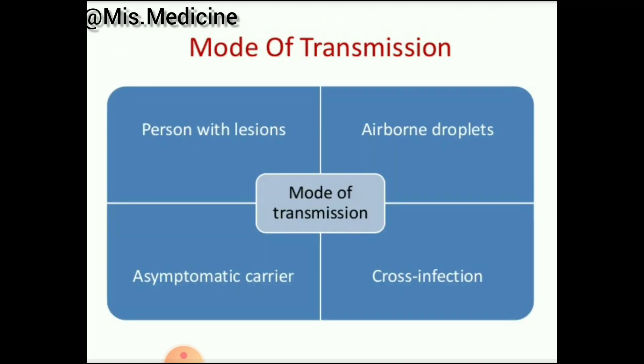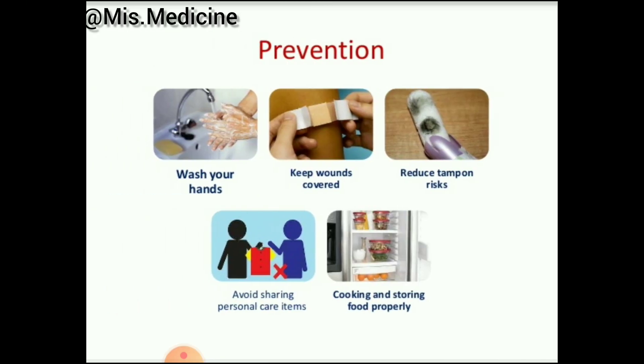The mode of transmission: Staph aureus can be transmitted by airborne droplets, cross infection, persons with lesions, and asymptomatic carriers.